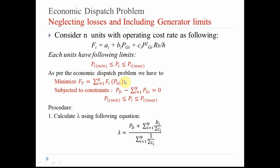The main objective function is to minimize Ft, which is subjected to these constraints. The first is the equality constraint where the power demand equals the sum of all power outputs of N generating units. Each unit also has a minimum and maximum limit, forming the inequality constraints. The total number of constraints is therefore N plus 1.